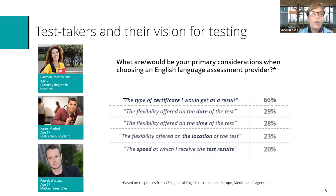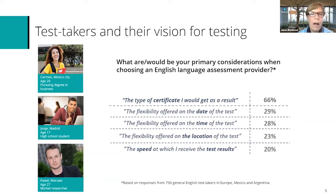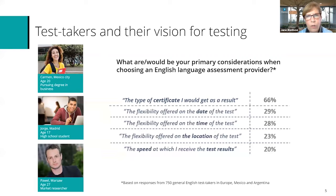Carmen, who's in Mexico City pursuing a degree in business, is a college student who intends to graduate at a certain proficiency level — that's one profile. Second is a high school student who's looking to graduate with a B2 or something that allows them entrance into a college of their choice. And the third profile is Pavel, a young professional looking to improve his opportunities in the job market. When we ask them their primary consideration when choosing an English language assessment provider, the top thing they say is the type of certificate they're going to get.